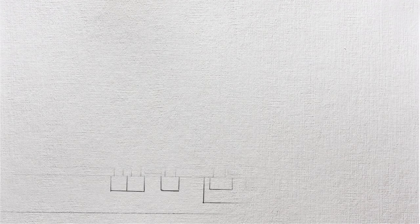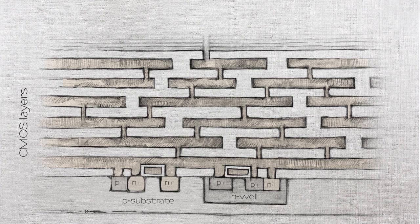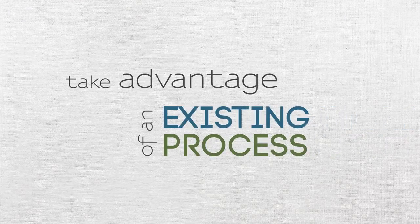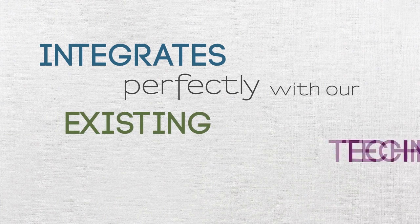The easiest way to integrate Memristors with an existing integrated circuit technology is to apply it in the processing at the very end — what we call back end of line. Front end of line is all the CMOS; back end of line is applying exotic materials or different processes for a specific application. We deposit the Memristor materials in maybe four or five processing steps in terms of layers, etch them, and at the end you've got your Memristor devices on top of your integrated circuit. The ability to put Memristors on top of CMOS opens up an amazing number of possibilities — you take advantage of an existing process that works very well, then add that next layer. It integrates perfectly into how we currently do things.